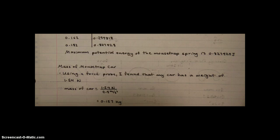Mass of the mousetrap car. To find the mass of the mousetrap car, I first weighed my car on a force probe and found that it has a weight of 1.54 newtons. Then to convert it into mass, I divided this weight by the gravitational constant, 9.8 meters per second squared, and obtained a mass of 0.157 kilograms.